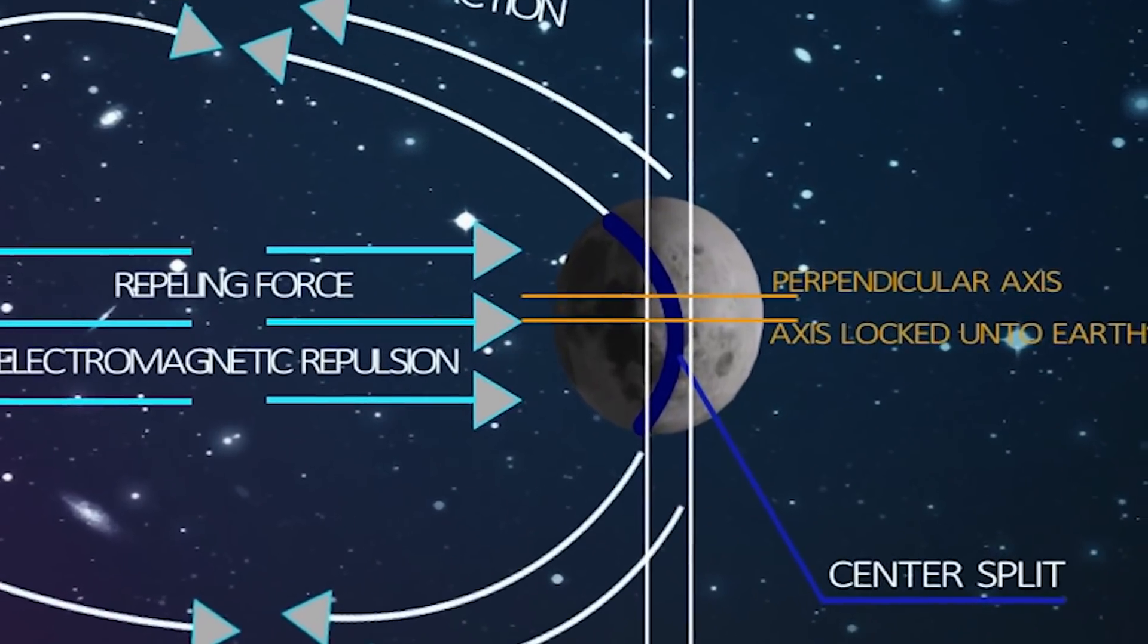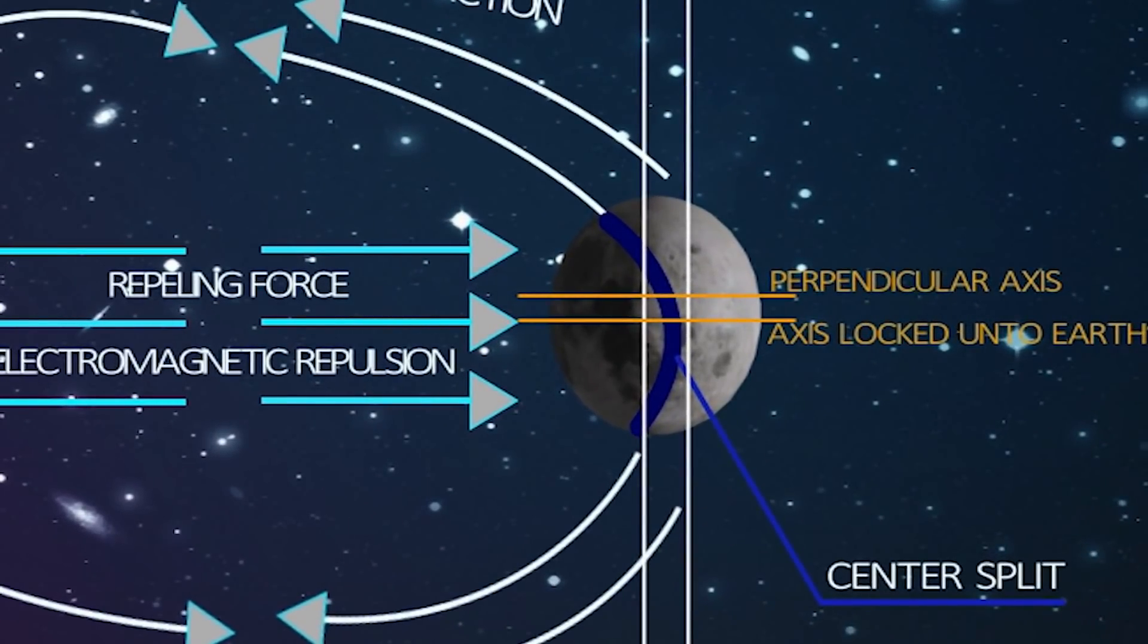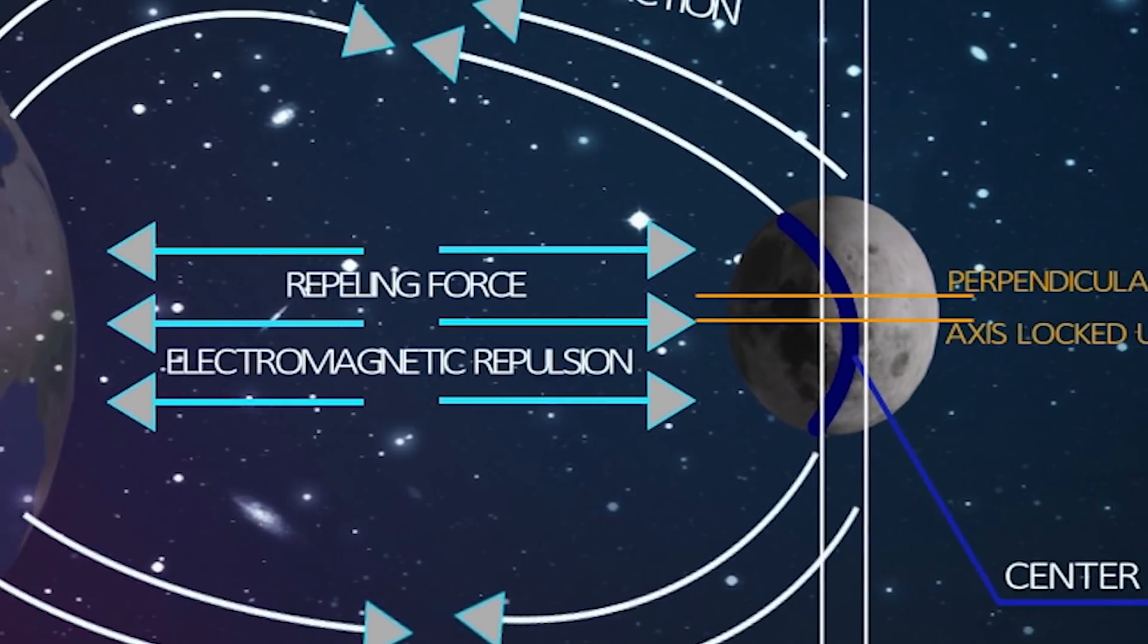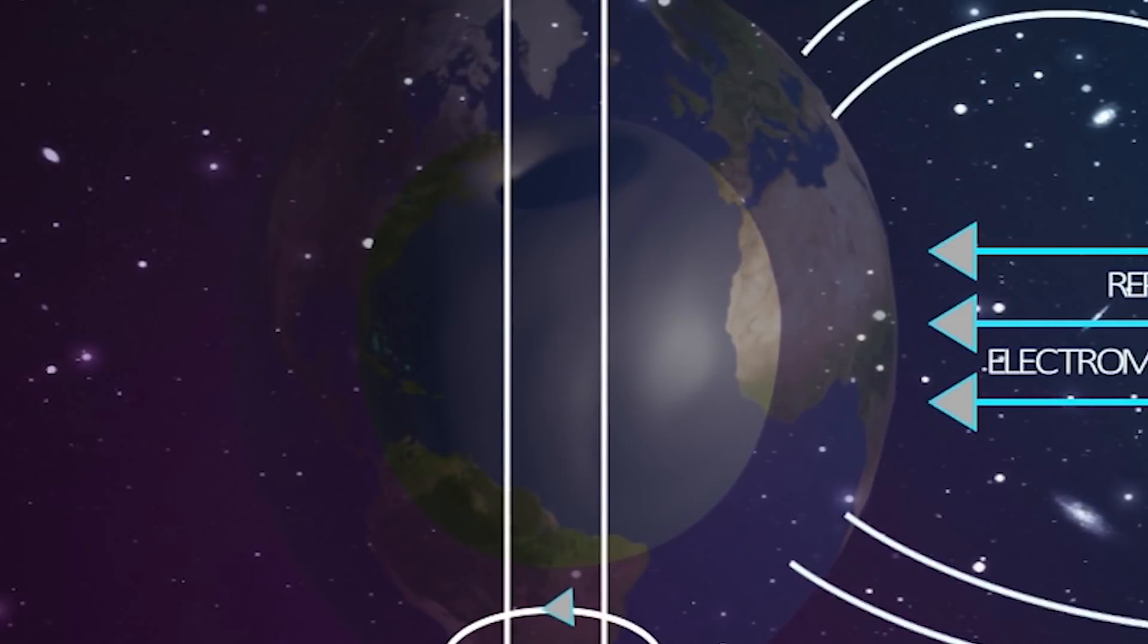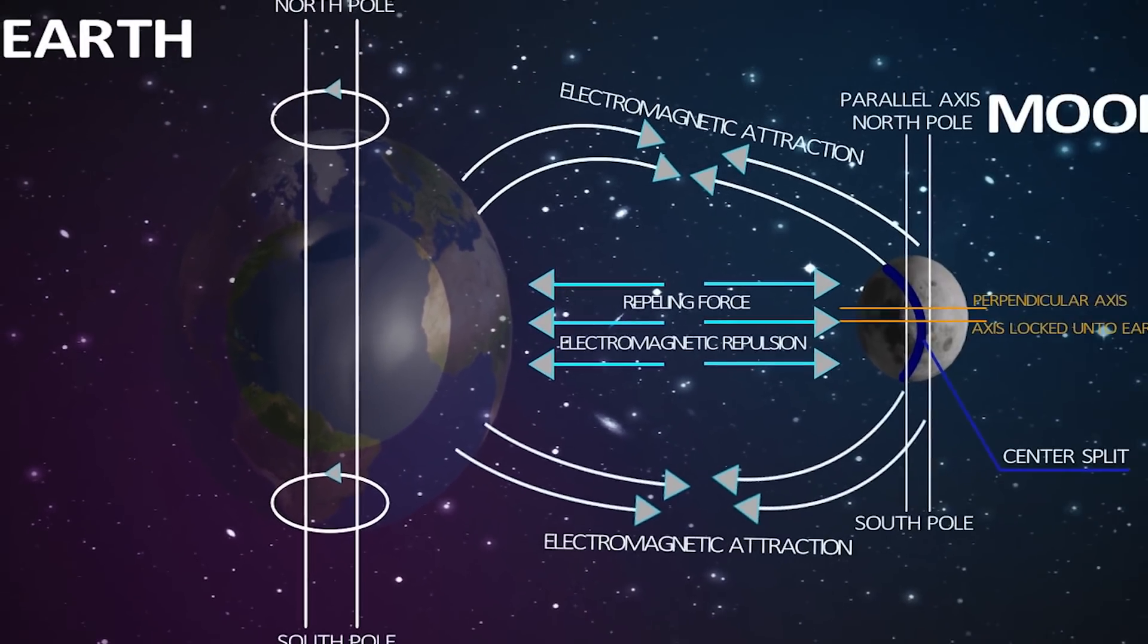A second axis, perpendicular to the first axis, pointing to earth and locking it onto earth's central structure, creating a two-way gravitational electromagnetic grip.